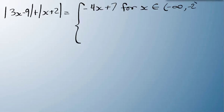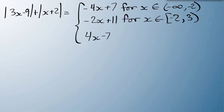The second part is minus 2x plus 11 for x between minus 2 and 3. The last part is 4x minus 7 for x from 3 to infinity.